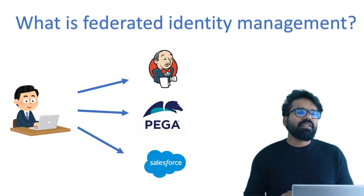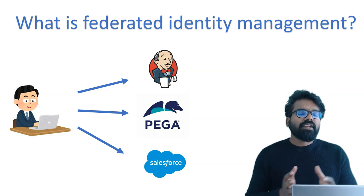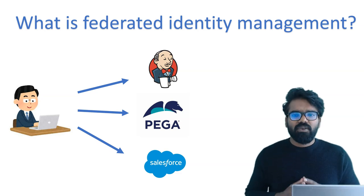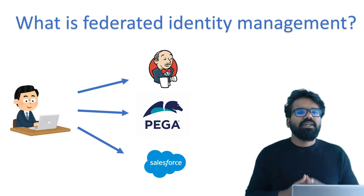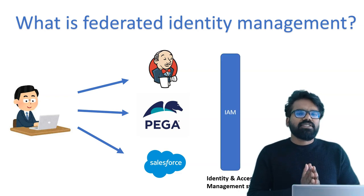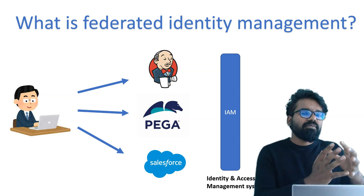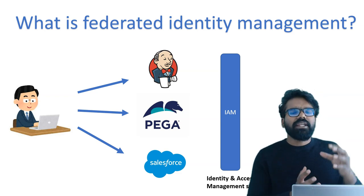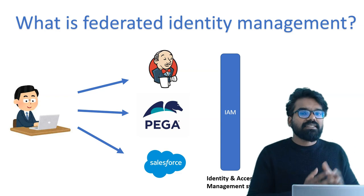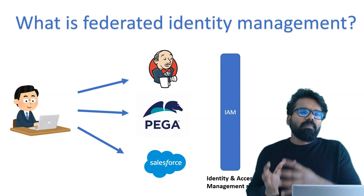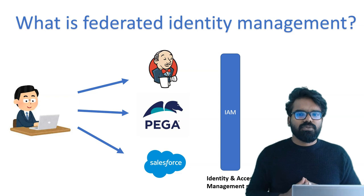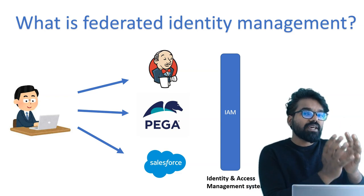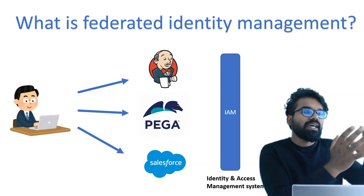Now let's talk about federated identity management. We know that we can access different applications using a single set of login credentials. So where do these credentials get stored? We don't need to store a copy of the credentials under each application. We will have our own identity management system. For example, a banking organization will have some kind of directory services where all employee details are stored, and from there they provide identity and access management for employees. Different applications can connect to this identity management system to authenticate and authorize users. This way, you use a single username and password stored in the IAM — Identity and Access Management — which is used by different applications through single sign-on.